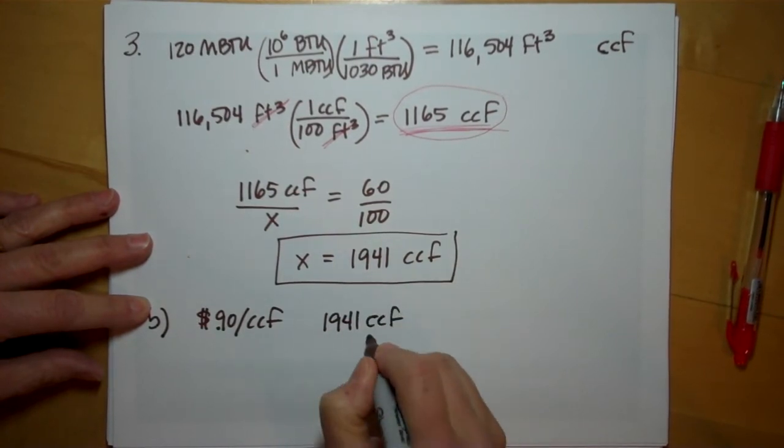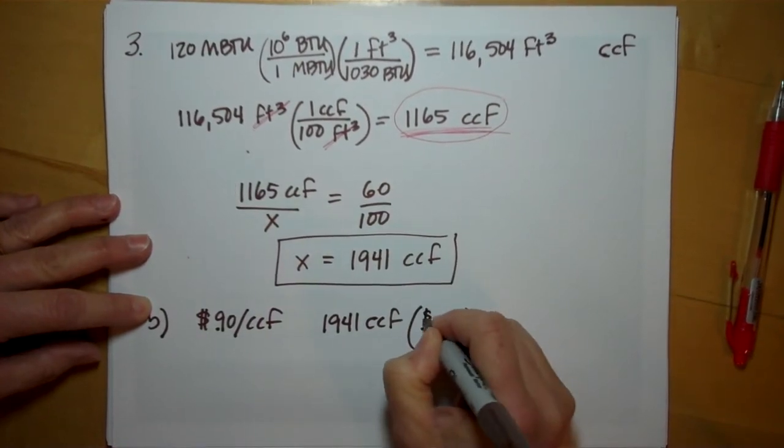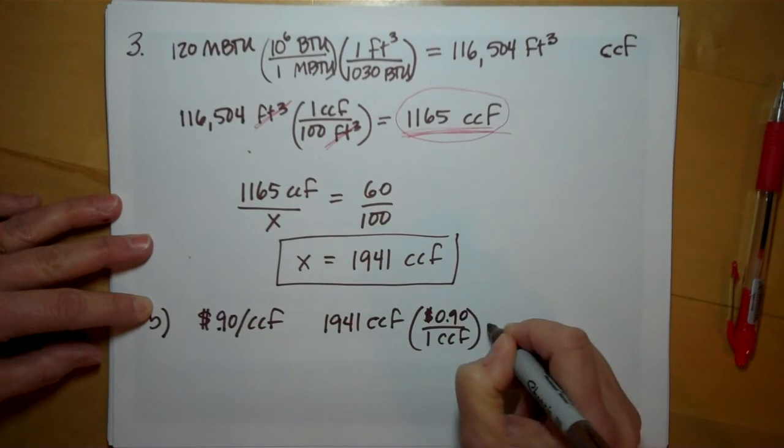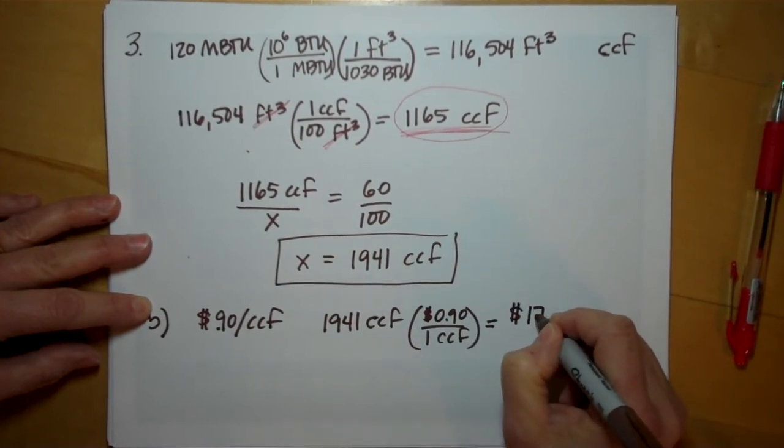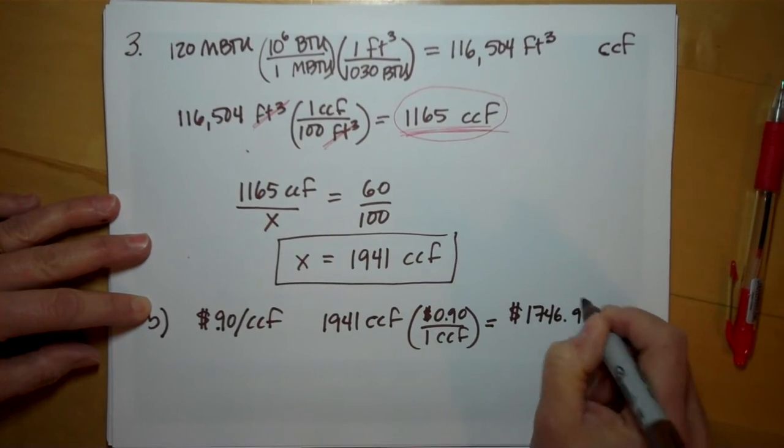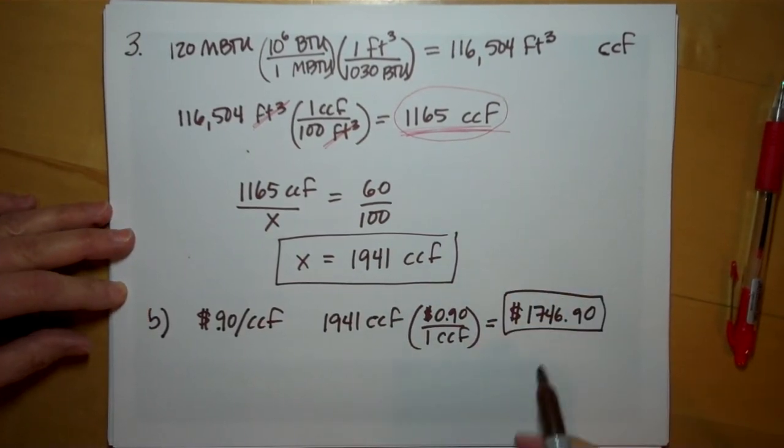If we need to purchase this much and one CCF costs 90 cents, then it's going to cost us $1,746.90 to heat the home for the winter. More if the cost of natural gas is higher.